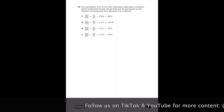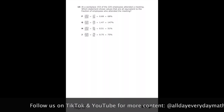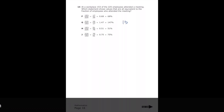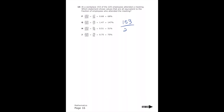Number 14: at a workplace, 153 of the 225 employees attended a meeting. Which statement shows values all equivalent to the fraction of employees who attended? The easiest fraction to make is 153 over 225. We definitely need that fraction, so we can mark out letters G and J. Now we need to simplify, dividing both top and bottom by 3.